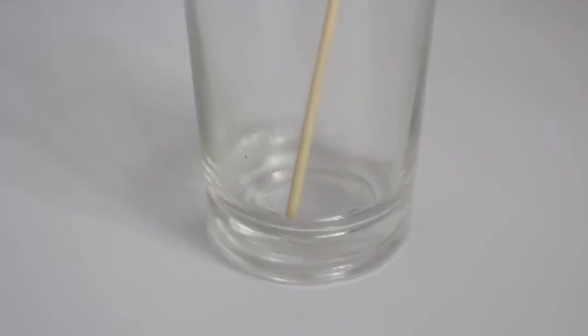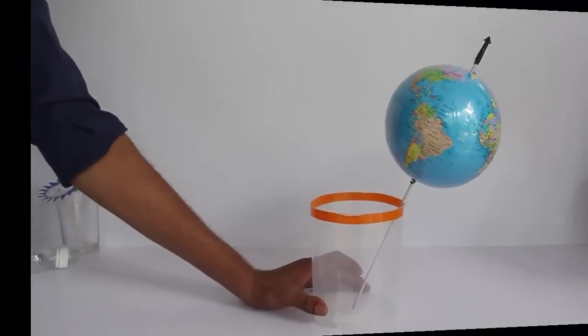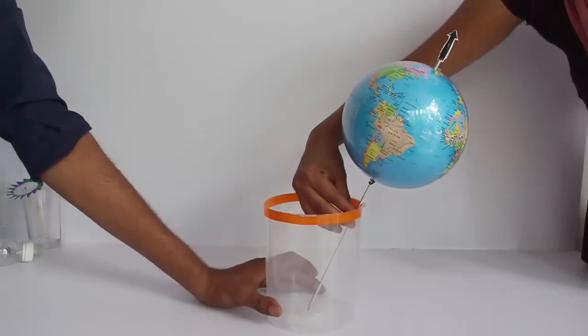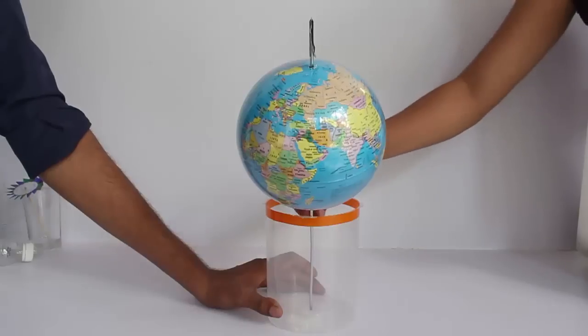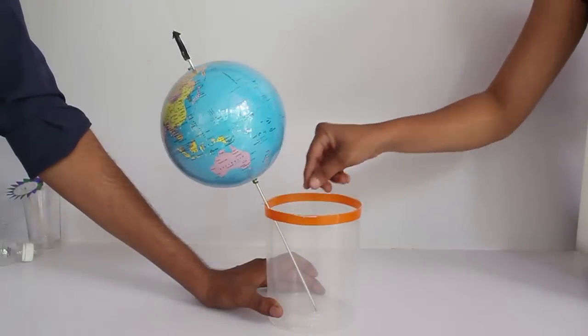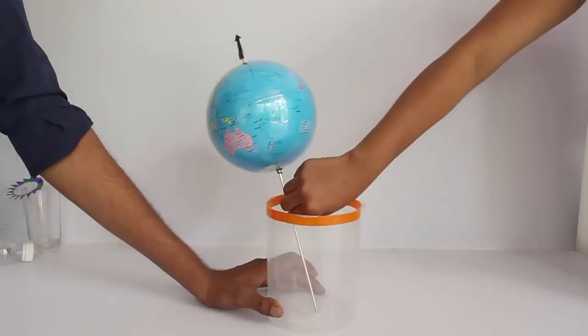Precession is caused by the gravitational pull of the sun and moon on earth. Hipparchus was the first who estimated the precession of earth about 130 BC.